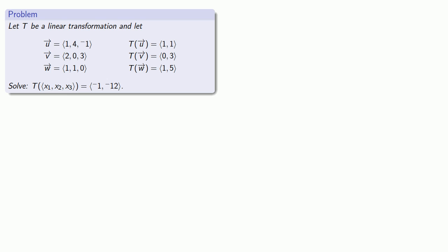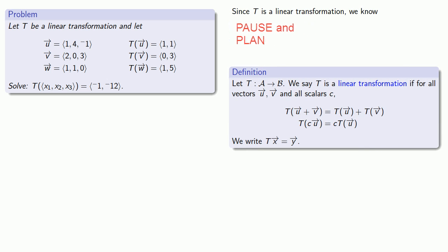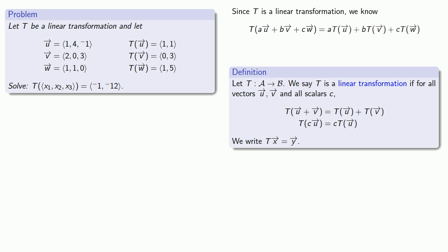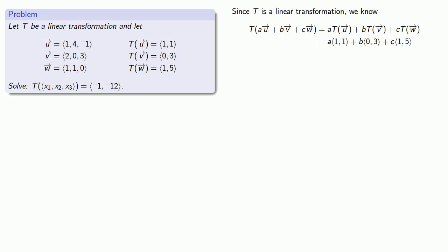How about going from the other direction? Suppose I want to obtain the result of a particular vector — what do I have to start with? Once again, we can make use of the fact that we're dealing with a linear transformation, and that once I know what the transformation does to some vectors, I know what it does to any vectors at all. We know that T of any linear combination of U, V, and W is going to be a linear combination of the vectors [1, 1], [0, 3], and [1, 5]. Since we'd like that linear combination to equal the vector [-1, -12], we want to express [-1, -12] as a linear combination of these vectors.